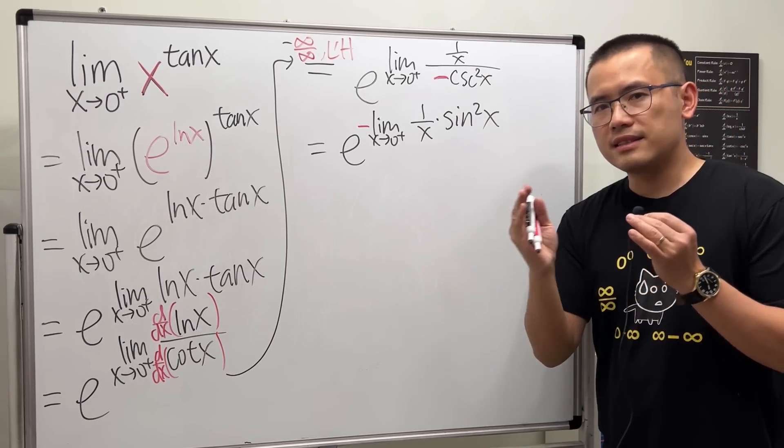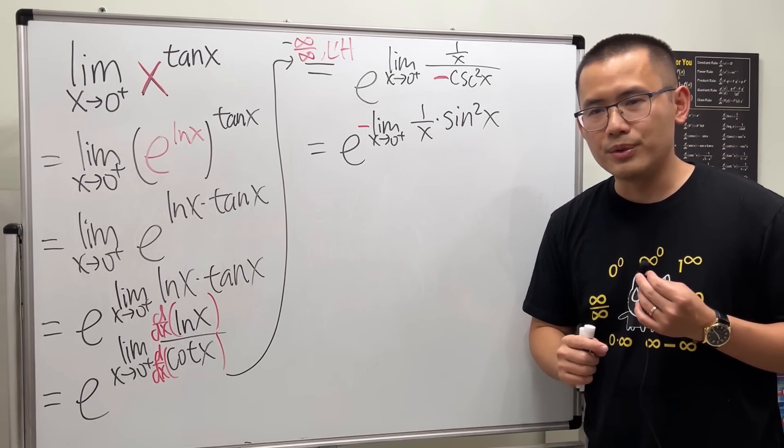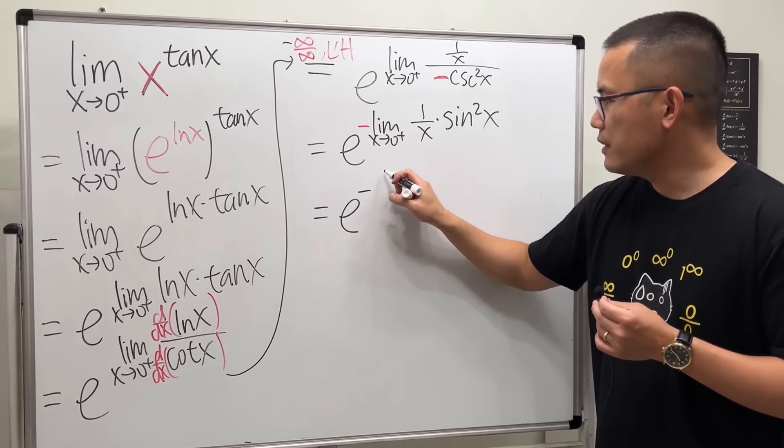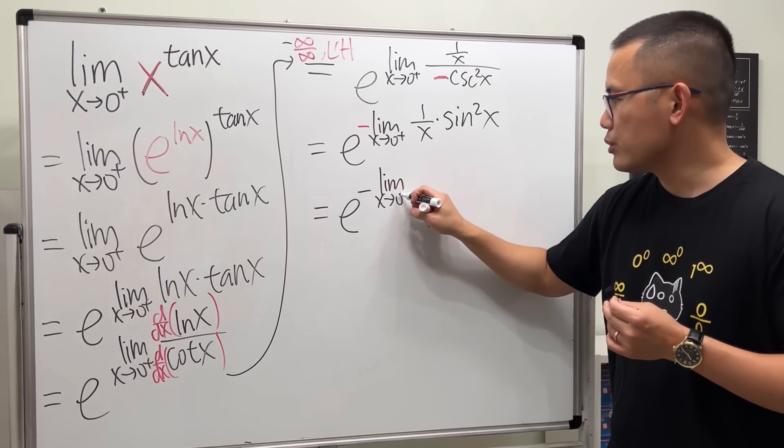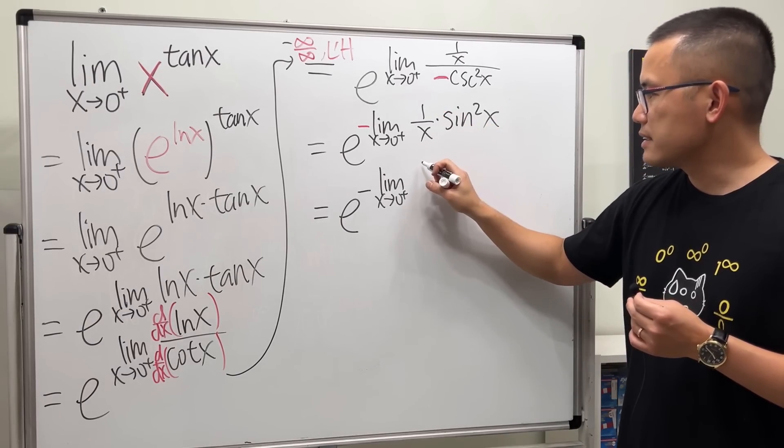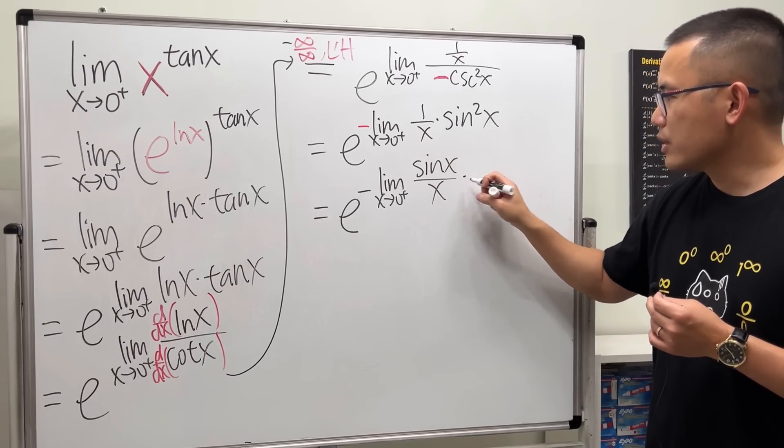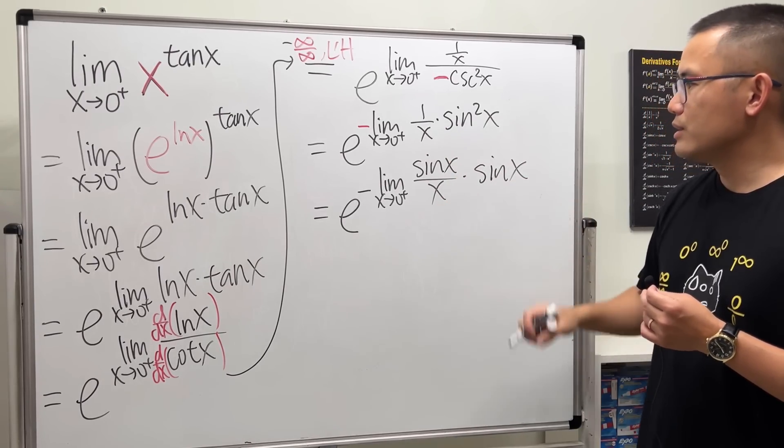And this means sine x times sine x. And this is what I'm going to do. Have a look. E and then this negative negative, limit x approaching zero plus, sine x over x, and then multiply by sine x, just like that.